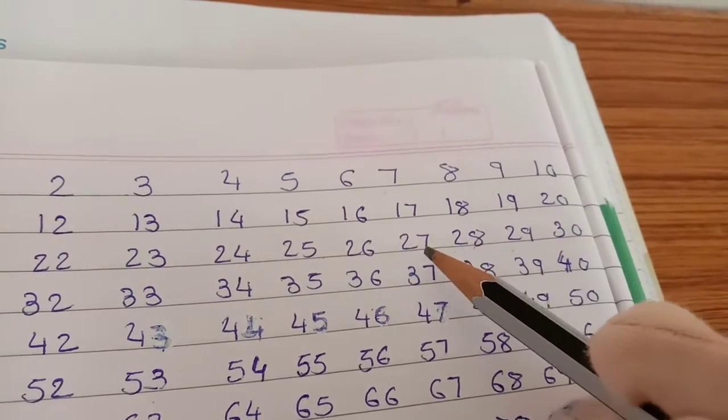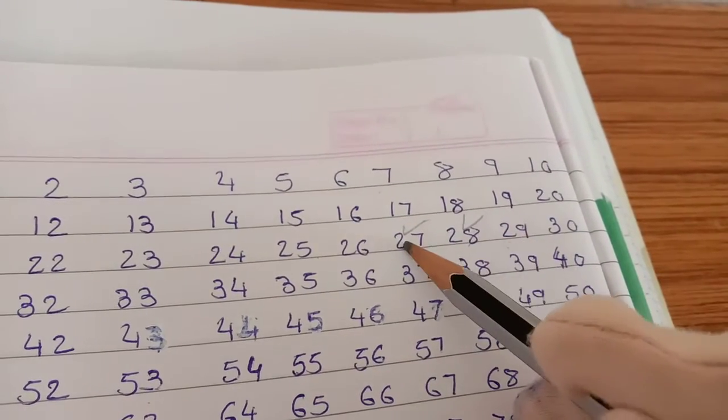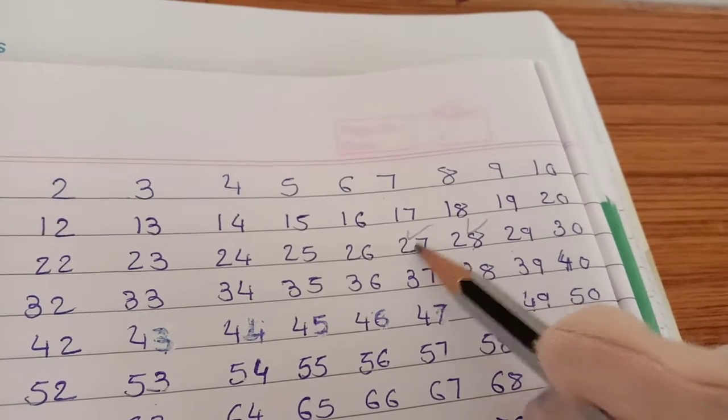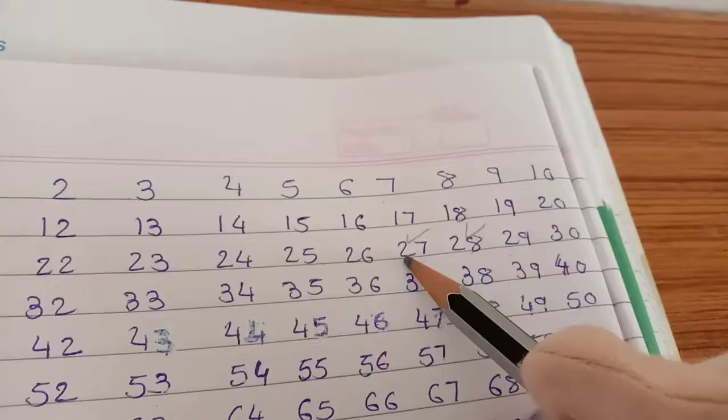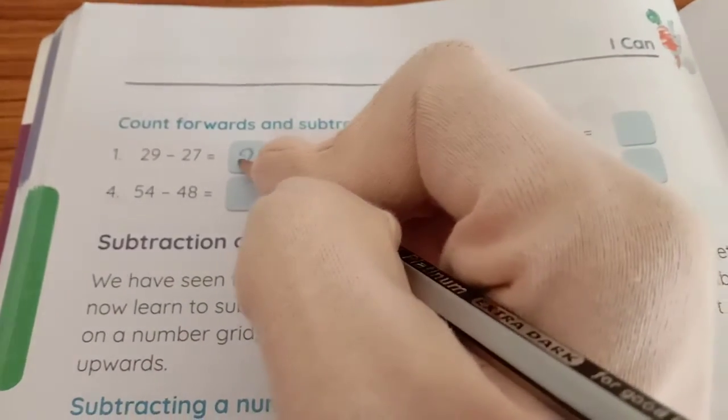So 29 minus 27, so we have to go back. So 28 and 27, 27 will come in here. So 1 and 2 number we have to back. So answer will get 2. 29 minus 27, so answer will get 2.